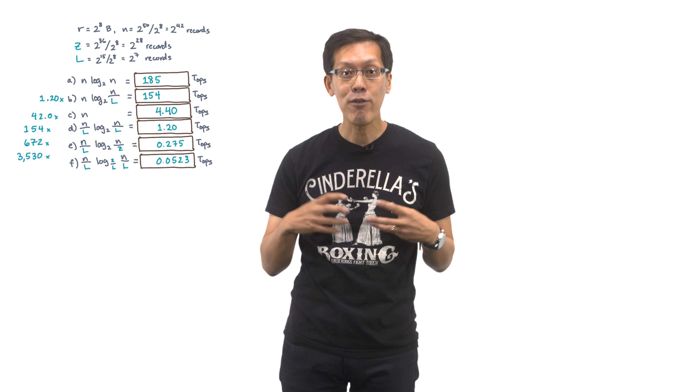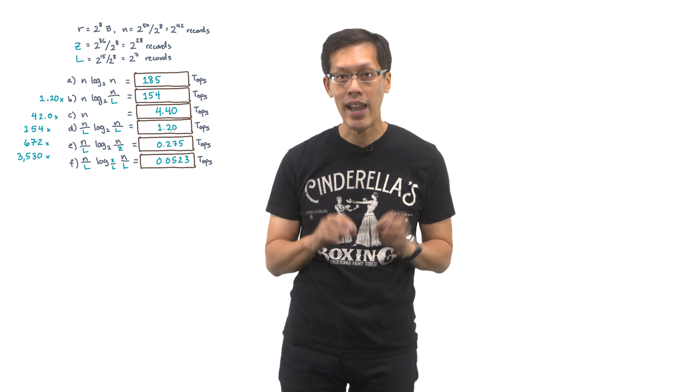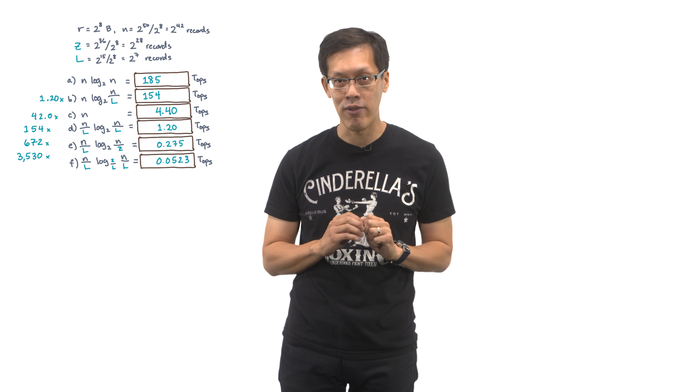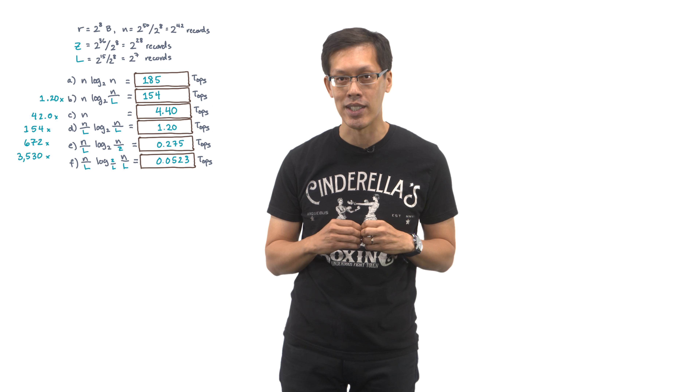This would happen if you could make memory accesses contiguous and exploit fast memory capacity to the greatest extent possible. And those wins can happen even if the factors of improvement are only log L or log Z, as in the case of merge sort.